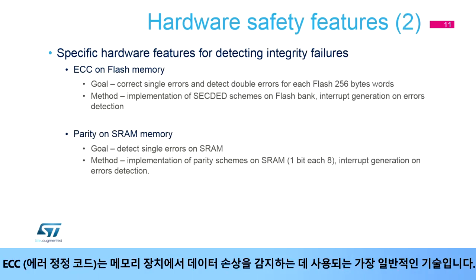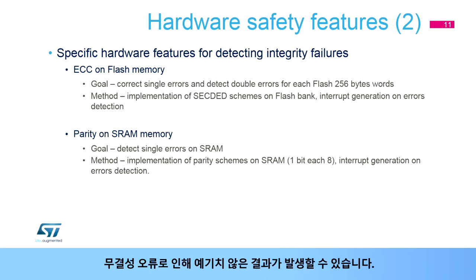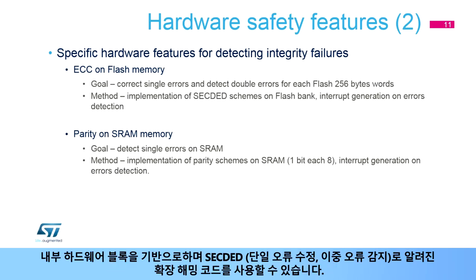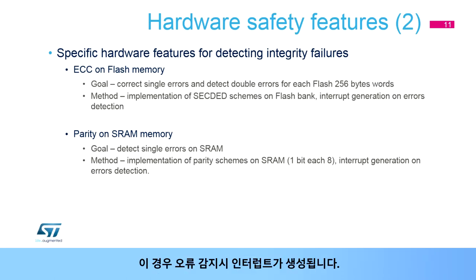The Error Correcting Code, ECC, is the most common technique used to detect data corruption on memory devices. An integrity failure could lead to unpredictable results. It is based on an internal hardware block and can use an extended Hamming code known as SECDED — Single Error Correction, Double Error Detection. In this case, an interrupt is generated on error detection.